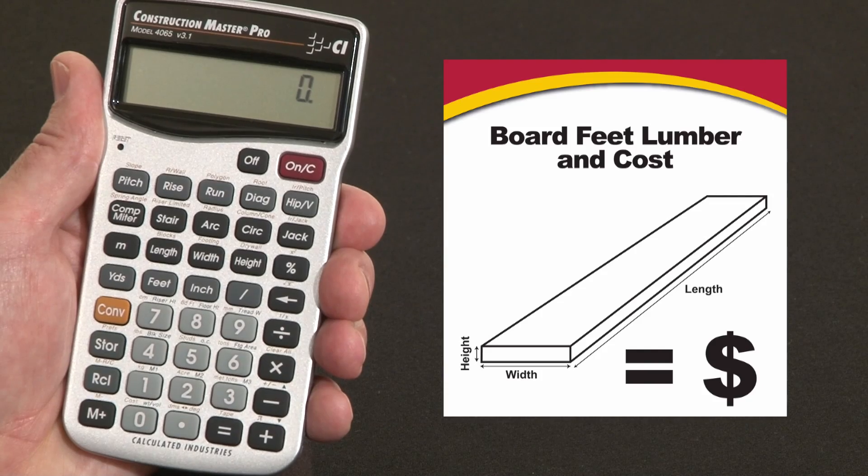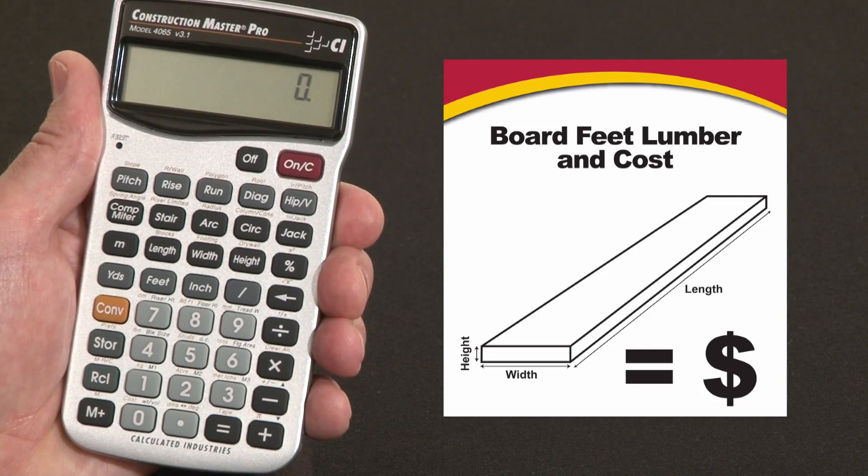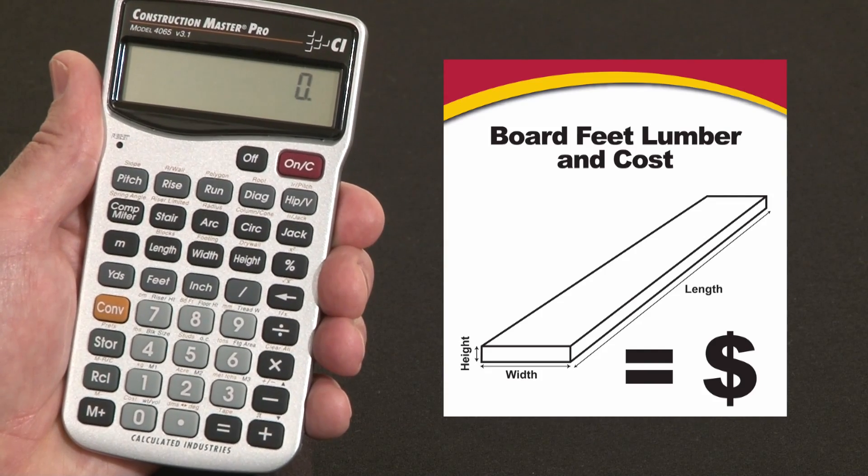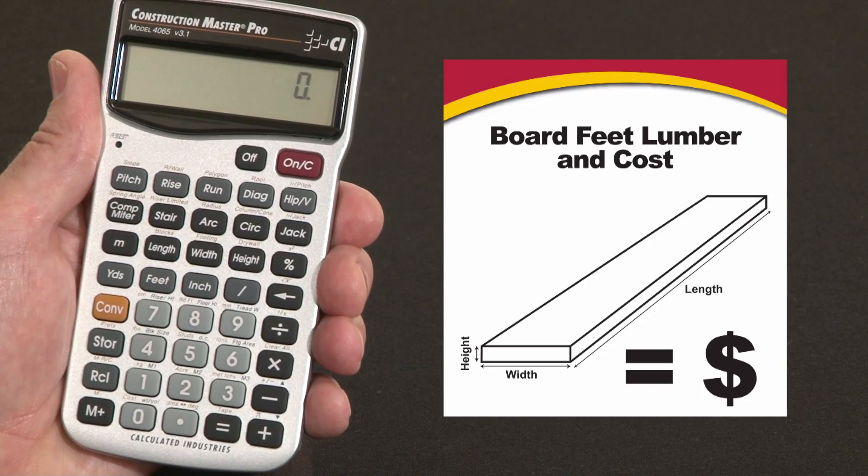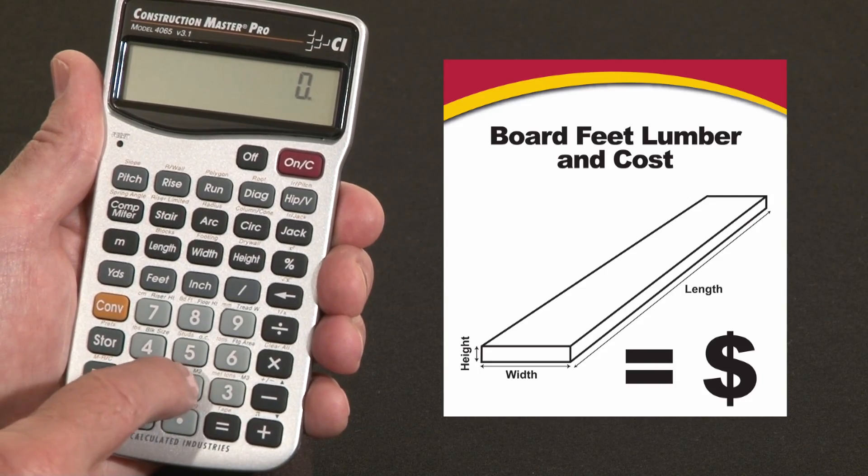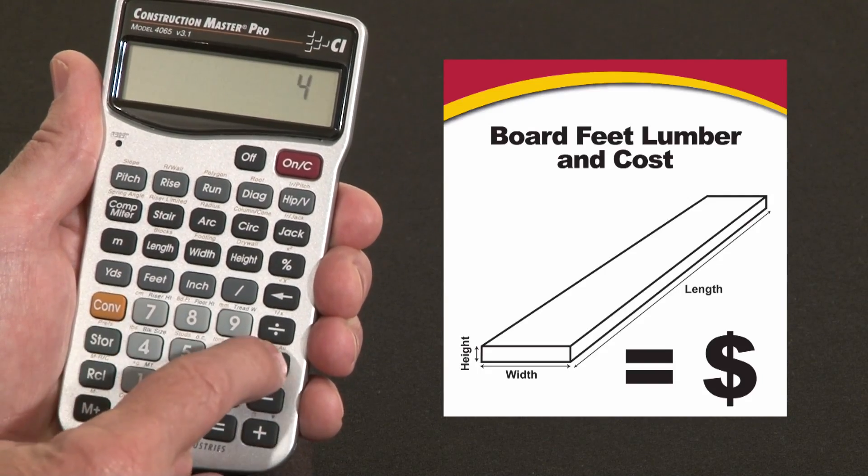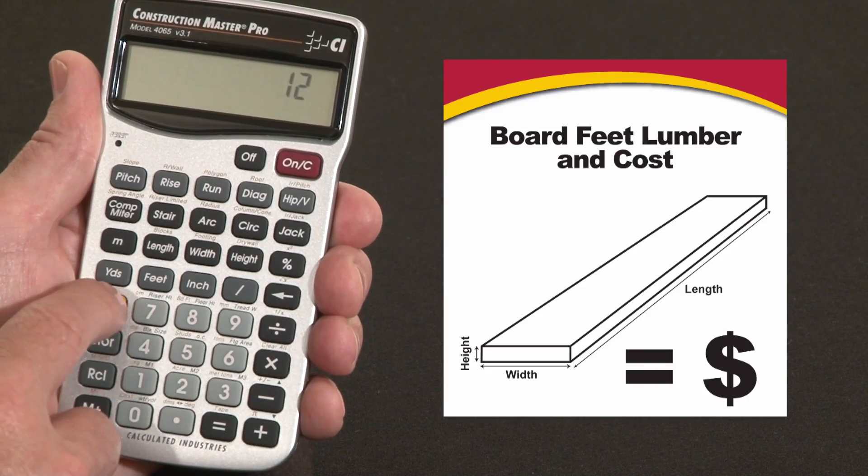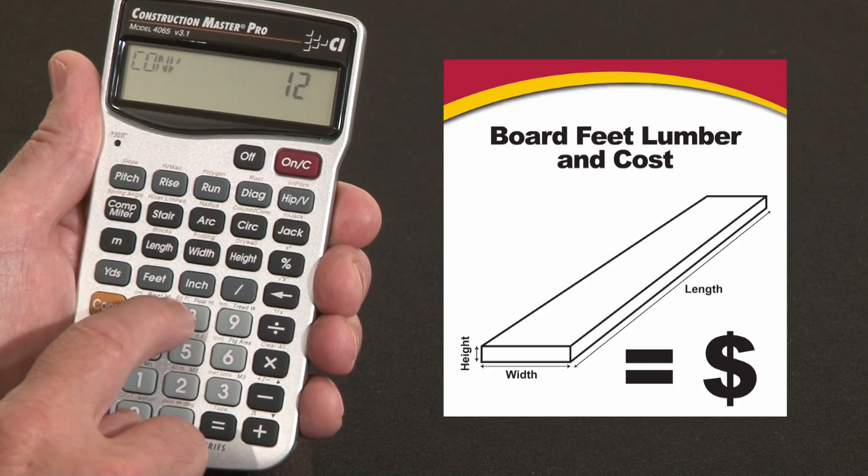The board foot function handles unitless entries just the way you see them, for example 2x4x8. Say we need... our lumber list shows 20 pieces of 2x4x12. The way I'd enter that is 2x4x12 convert, and over the 8 key it says board feet, the second function.